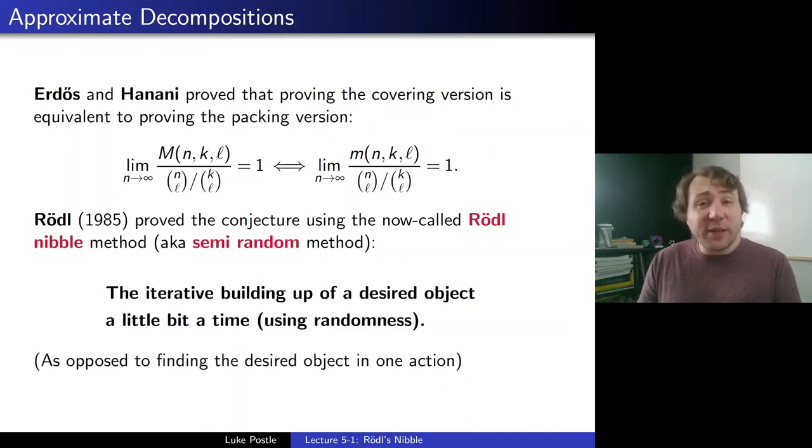So this is as opposed to what we've been doing throughout this entire class so far, finding the desired object in one action, in one setup. So instead of finding the packing or covering, we set up some probabilistic experiment and say, aha, there it is, with some probability it exists. Instead, we're going to use an iterative approach. We'll just do a little bit at a time. So that's quite a powerful idea that's quite natural, again, to humans, that we often do things like that. We don't do everything all at once. We work a little bit at a time to make progress.